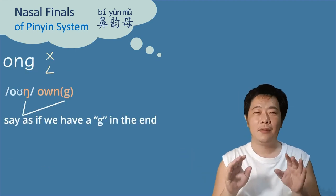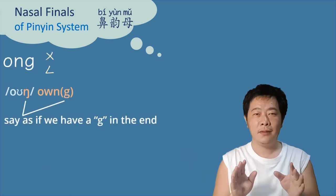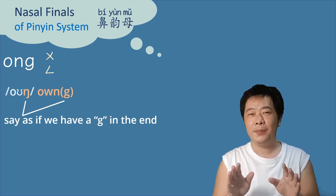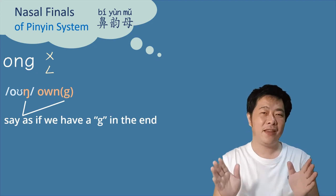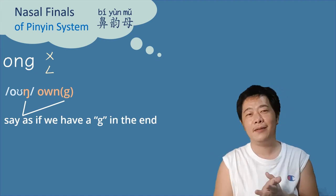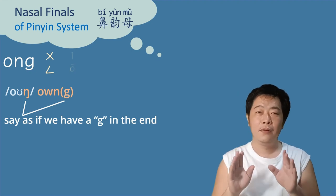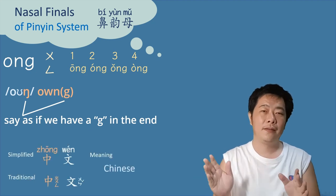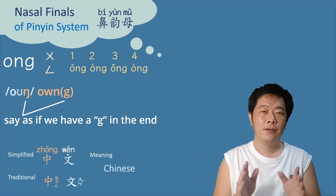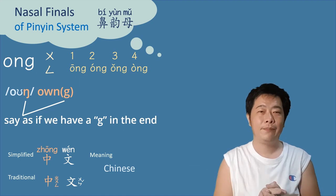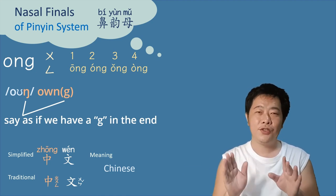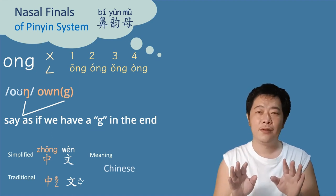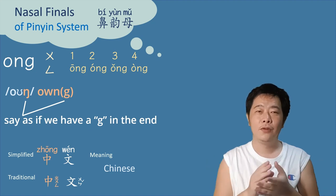恩 spelled O-N-G (ong) is the word 'ong' with a deeper nasal. If you find it difficult, just say 'ong' and that's fine. Tones: ōng, óng, ǒng, òng. Example: 中文 (Zhōngwén), meaning Chinese. By the way, the Z-H (zh) here sounds the same as the D in 'dream' — zhī, zhī, zhōng, zhōng.